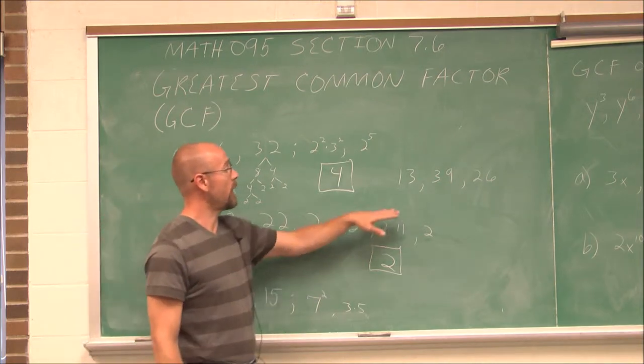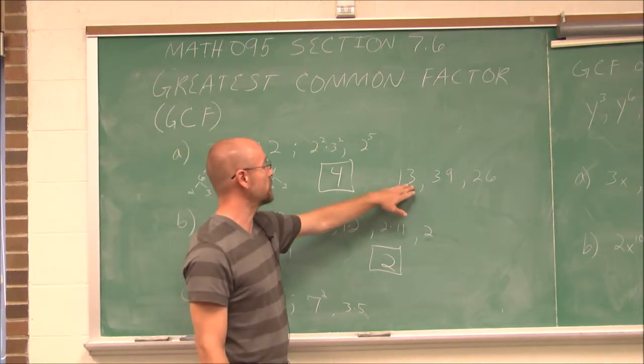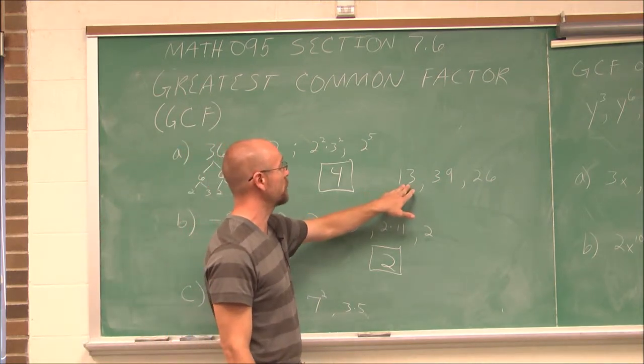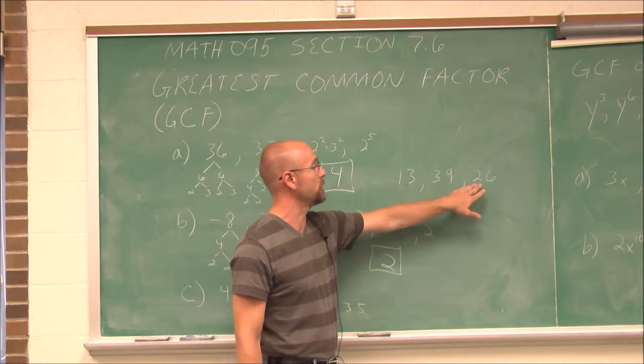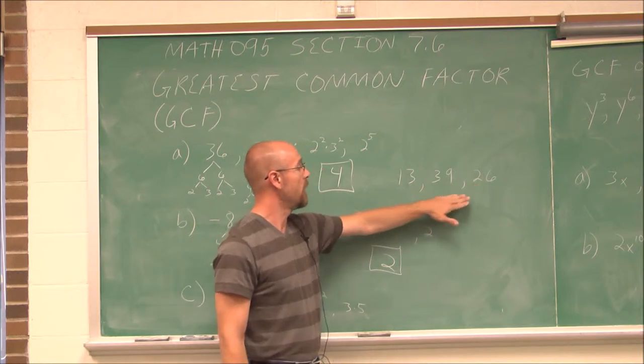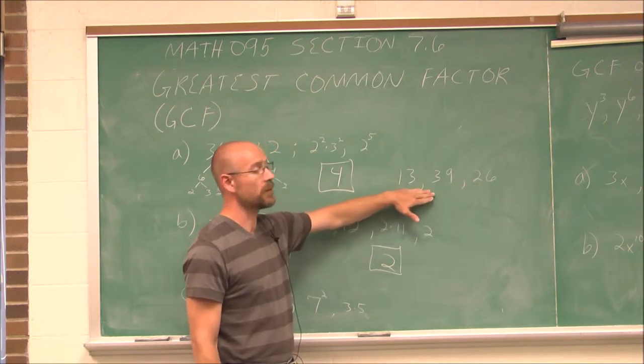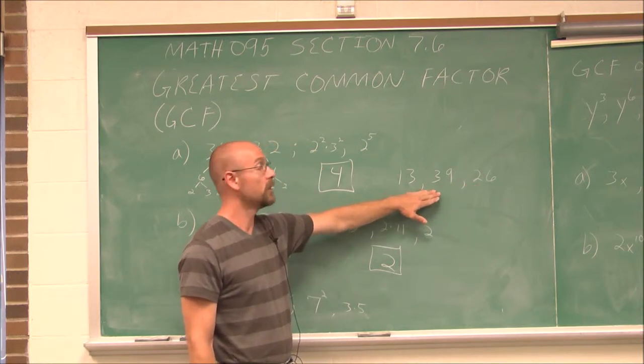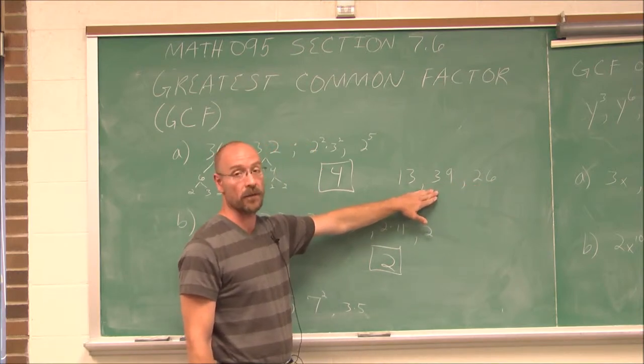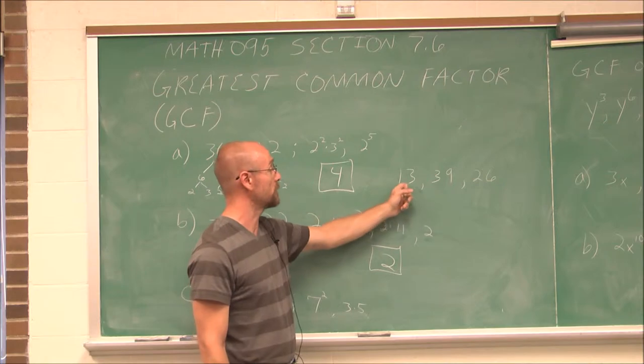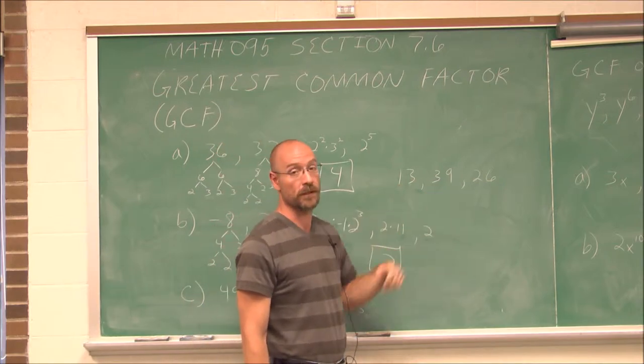So here's the next example: 13, 39, and 26. I want you to try this one on your own to find the greatest common factor of these three numbers.